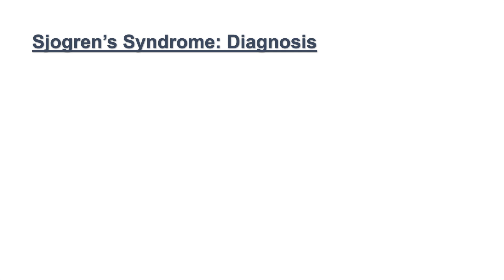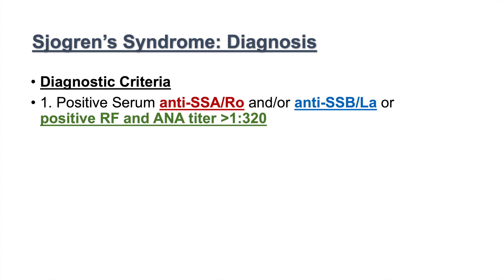To make the diagnosis of Sjogren's syndrome, there are specific diagnostic criteria. The first is having a positive serum anti-SSA (anti-Ro) and/or a positive anti-SSB (anti-La) antibody. Those two antibodies — anti-Ro and anti-La — are the ones associated with Sjogren's syndrome. Alternatively, a positive rheumatoid factor and ANA titer greater than 1:320 also satisfies this first criterion.